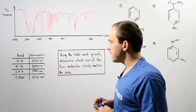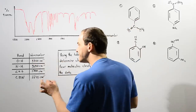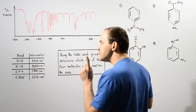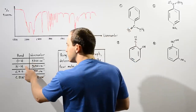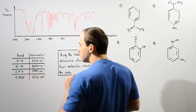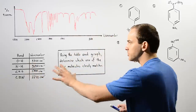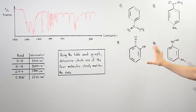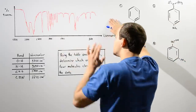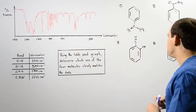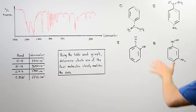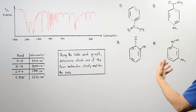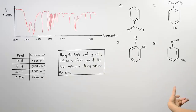This table gives us the specific wave number values for each one of these chemical bonds, and we want to use that to determine which one of these molecules corresponds to this graph. Let's begin by looking at these four molecules and describing the different types of chemical bonds that we have.